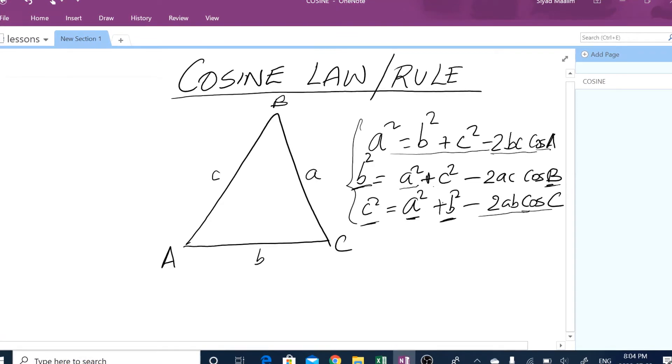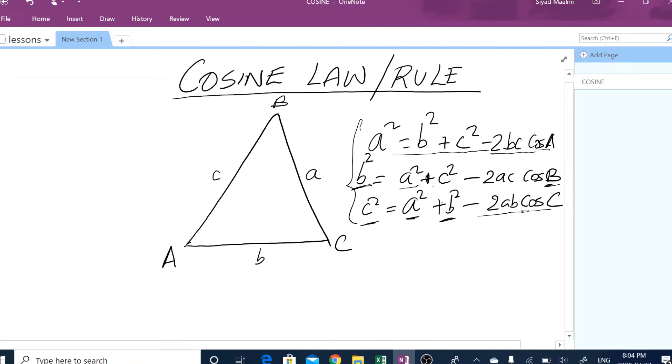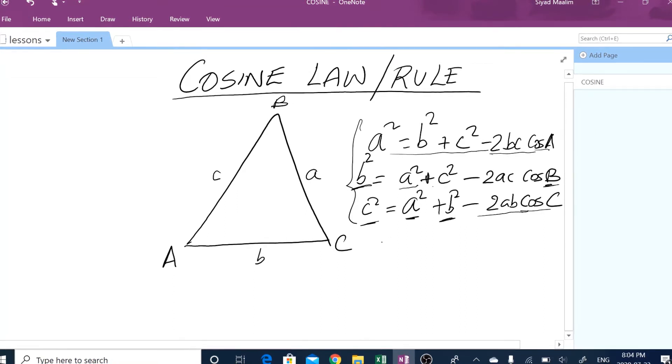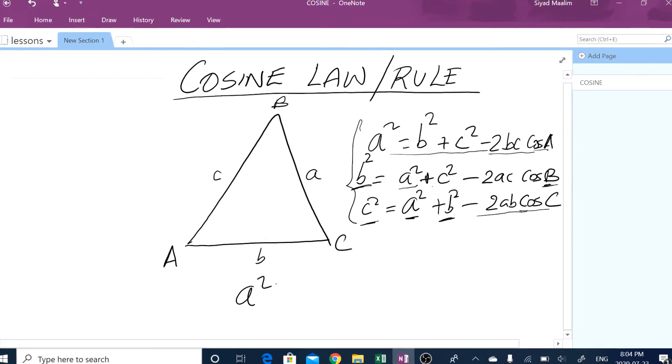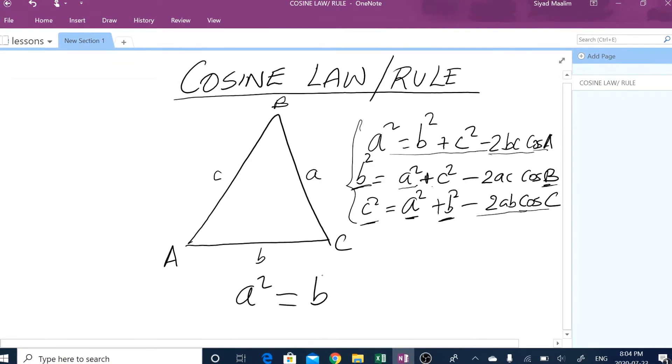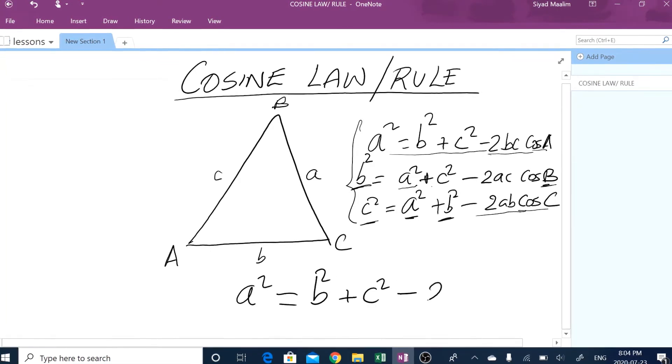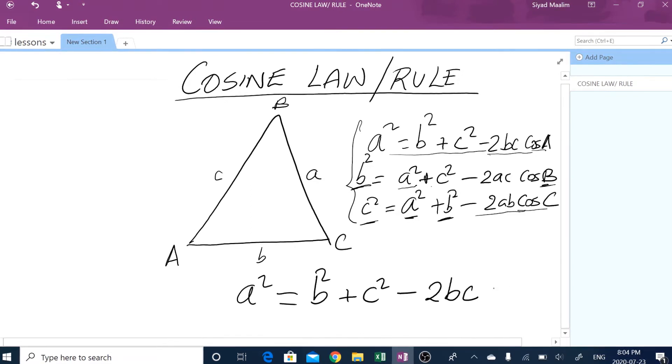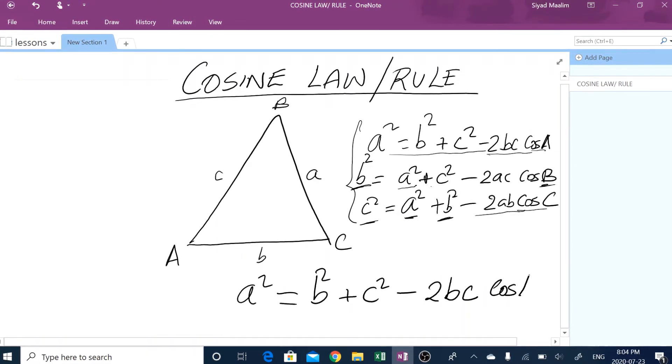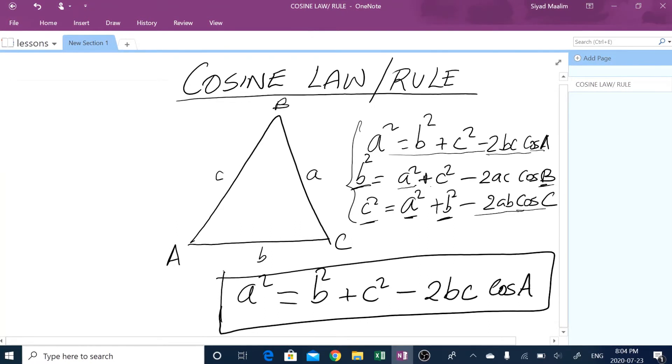all these three formulas here are the same. So you could use any of them to derive the other two. Let us assume that we want to use a squared equals b squared plus c squared minus 2bc cos A. Moving forward, we would be using this formula.